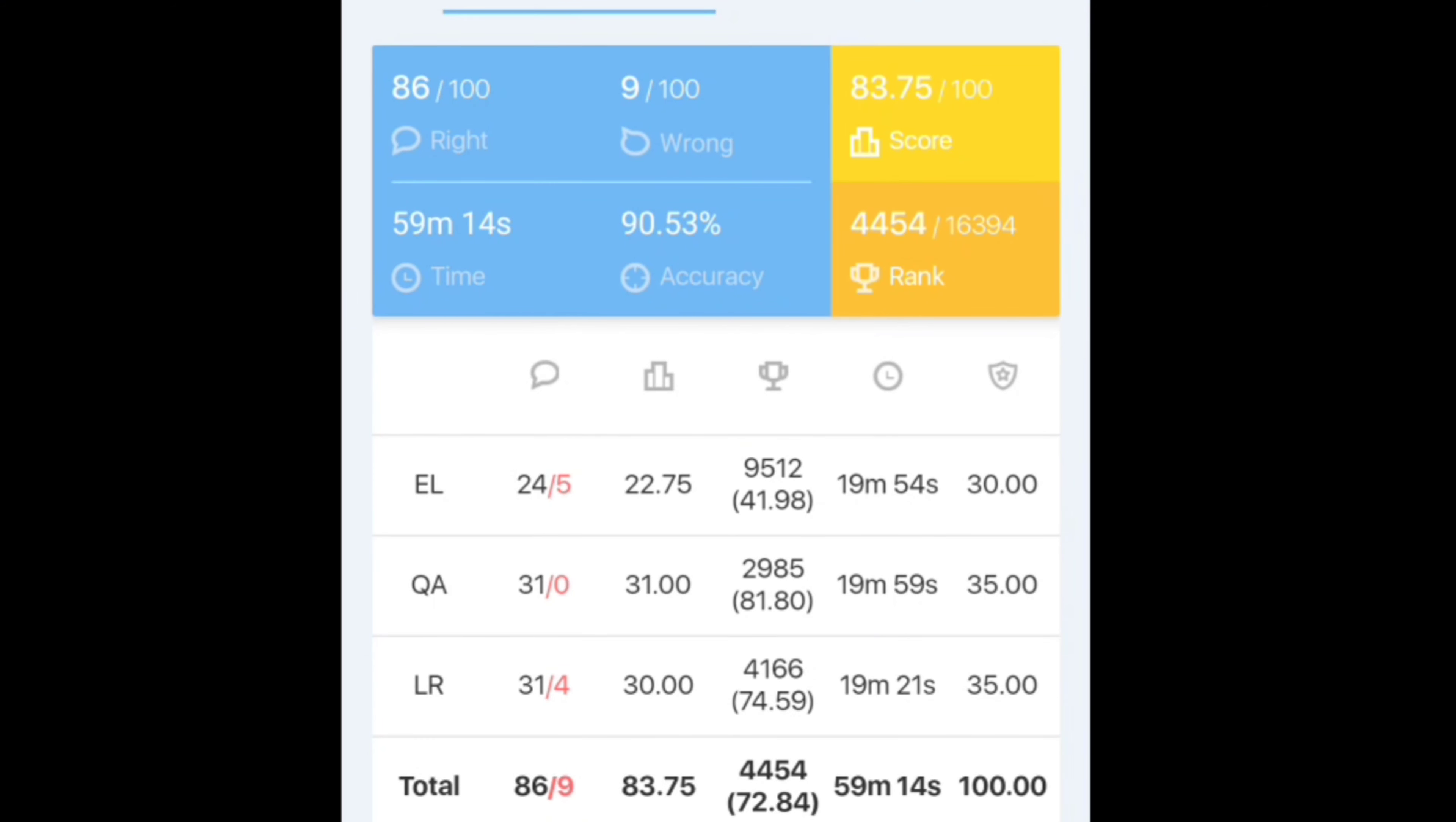So this is my score guys. Overall I attempted 95 questions. Out of 95, 9 are incorrect, 86 are correct. Overall I got 83.75. And in English I did 5 mistakes, 22.75 my score. And in quant I attempted all that, sorry, 31 questions, 4 questions are left. And in reasoning I attempted all 35 but 4 are incorrect. Overall I got 33.75. So this is my score. Anyone attempted this memory based mock test, so please share your score. Thank you.